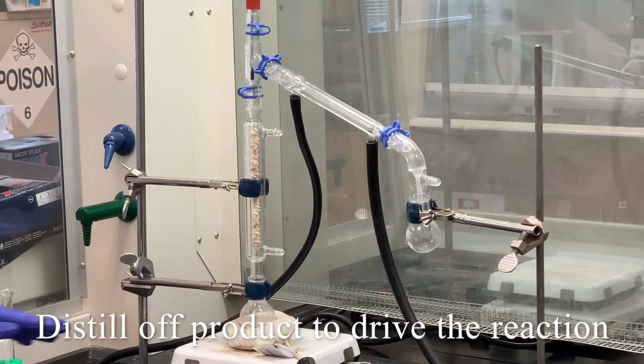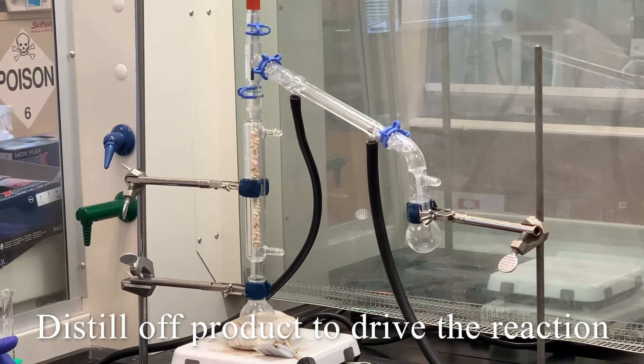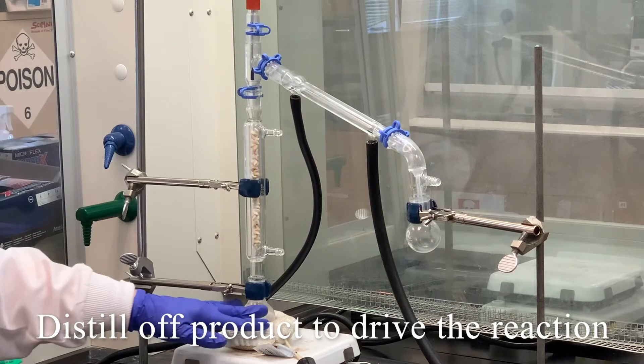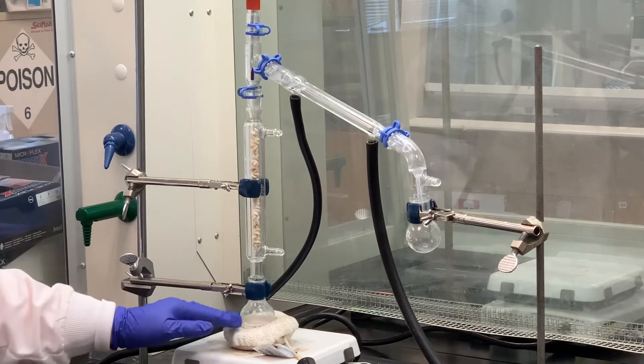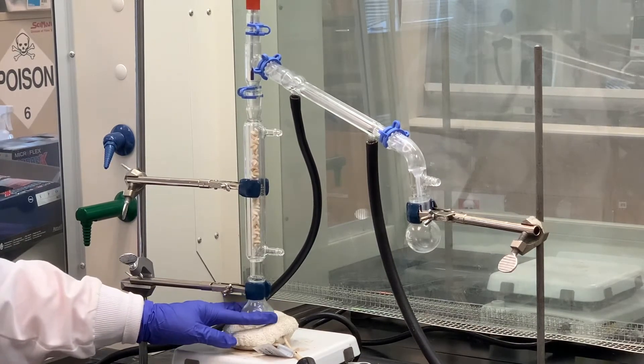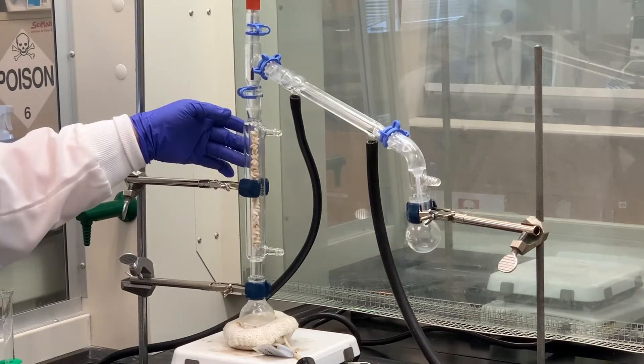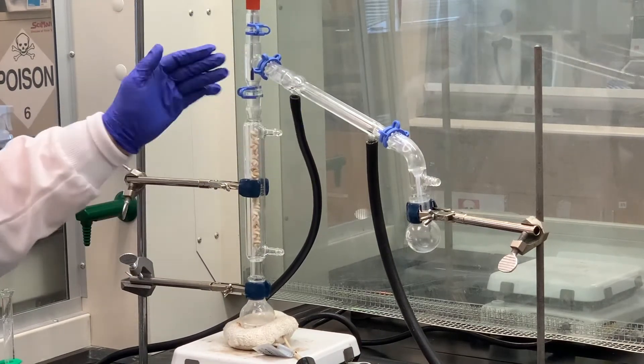So one way that we can make that reaction go more to the right, if it is an equilibrium, is to distill off our cyclohexene when it forms. So we're using a fractional distillation. We're going to start heating this. And I will say that it's important not to heat it on high initially. We know it takes a while for this to go up through the fractionating column and then down the condensing column.